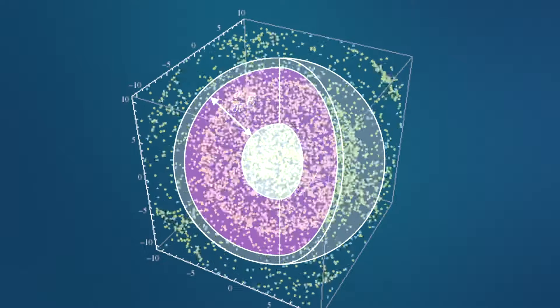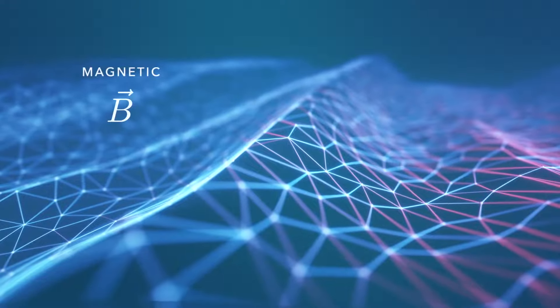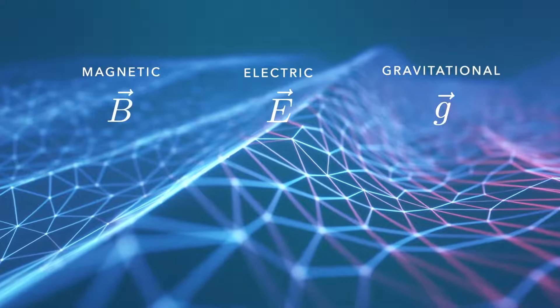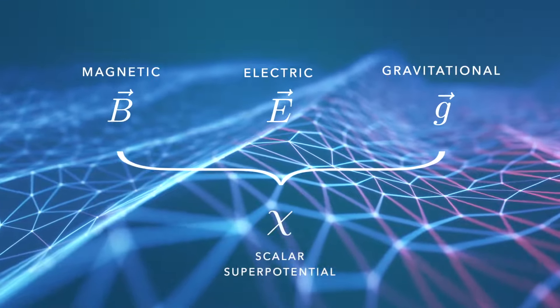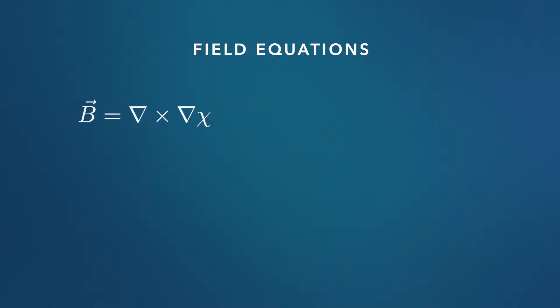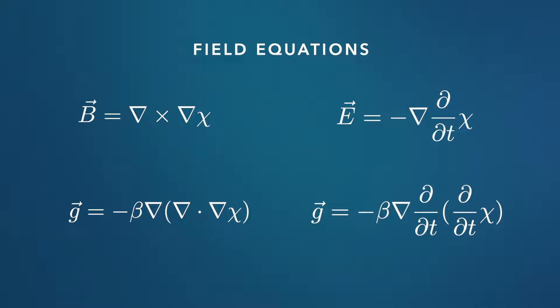For posterity, let's put everything together on one screen and show how the magnetic, electric, and gravitational force fields all come from a single underlying scalar superpotential. 1. The magnetic field equals the helical curling of the gradient of the scalar superpotential. 2. The electric field equals a gradient of a time-varying scalar superpotential. 3a. The gravitational field equals a gradient in the divergence of the gradient of the scalar superpotential. 3b. The gravitational field equals a gradient in a time-varying scalar superpotential that varies over time.